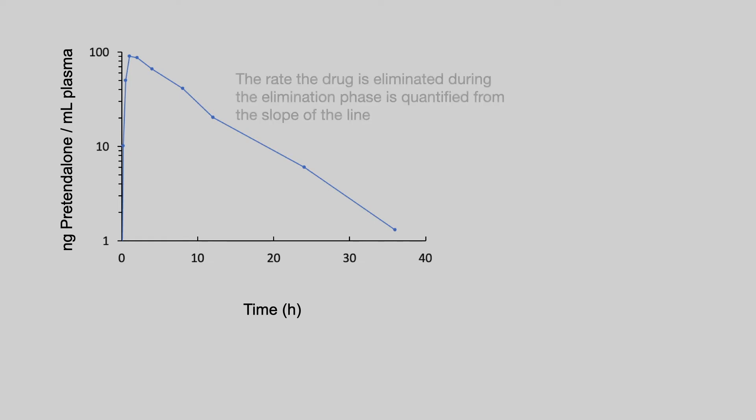Having clarified that, now let's quantify the rate the drug is eliminated. And we can quantify that from the slope of the straight line portion or the exponential portion of the semi-log plot. We are going to use the oral data for pretendalone as an example. And we'll now calculate the slope of the line for pretendalone.